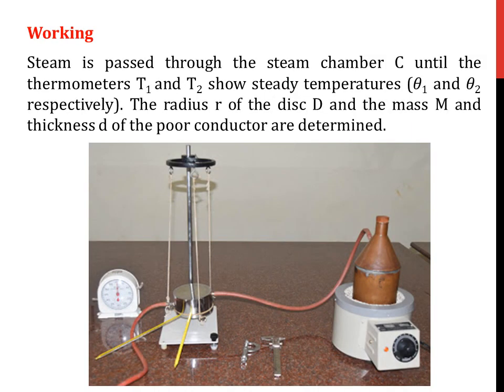The experiment is performed by allowing steam to pass from the boiler to the steam chamber C. This steam is allowed to flow until the thermometers T1 and T2 show the steady state temperatures θ1 and θ2 respectively. After the measurement of these two temperatures, the radius r of the disc D, the thickness of the cardboard small d, and the thickness of the metal disc small h are measured.